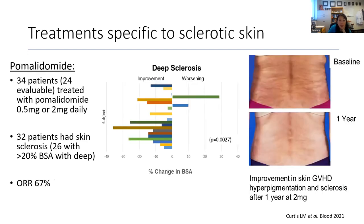Pomalidomide, a second-generation immunomodulatory drug, was studied at the NIH in 34 patients, 24 evaluable for response. It was given at either 0.5 milligrams or 2 milligrams daily. Of these, 32 had skin sclerosis, 26 with more than 20% BSA involved with deep sclerosis. The overall response rate was 67%. The figure shows percent change in BSA specifically for patients with deep sclerosis, with many showing improvement. Pictures demonstrate improvement in hyperpigmentation and sclerosis one year after treatment.